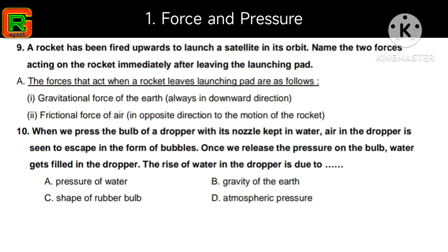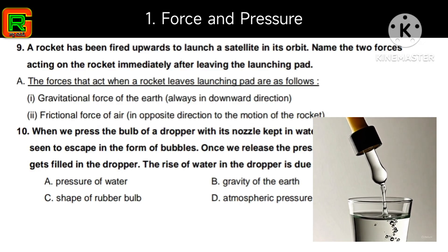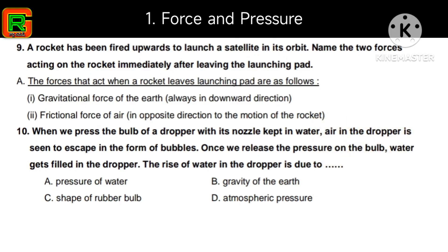Last question: when we press the bulb of a dropper with its nozzle kept in water, the air in the dropper escapes as bubbles. Once we release the pressure, water gets filled in the dropper. The rise of water is due to atmospheric pressure — pressing the bulb creates low pressure inside, and the atmospheric pressure, being greater, pushes the water up into the dropper.